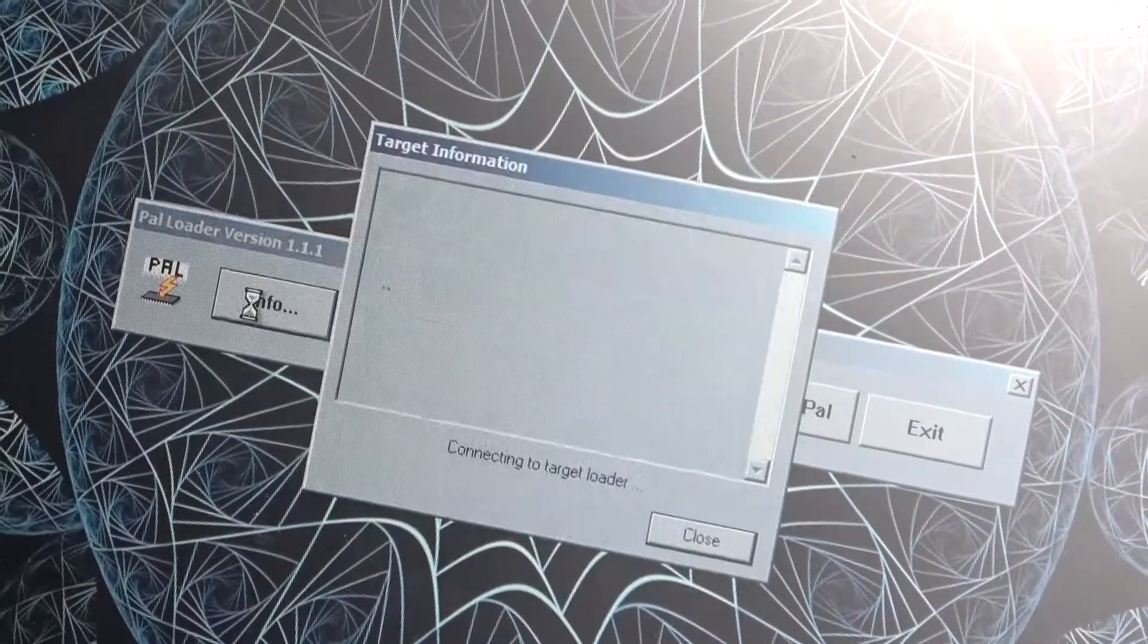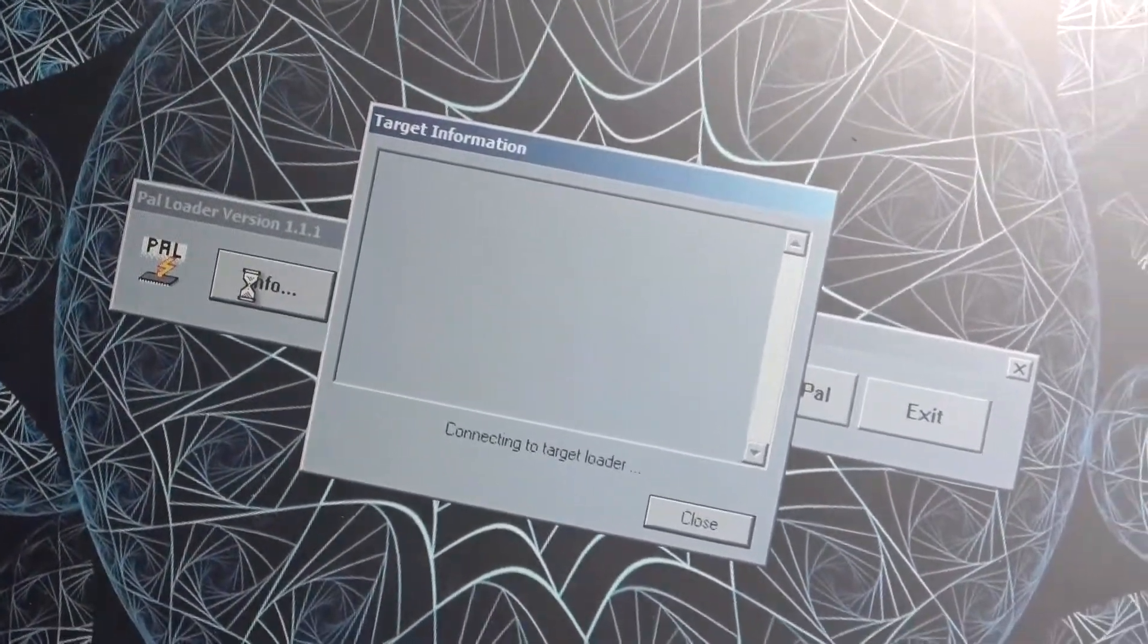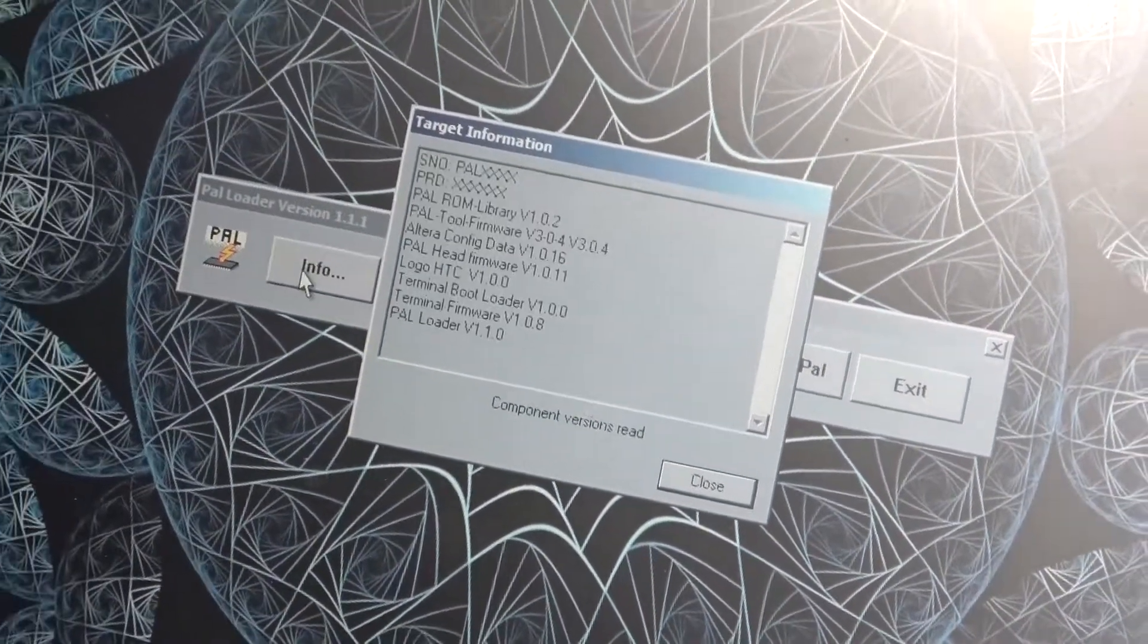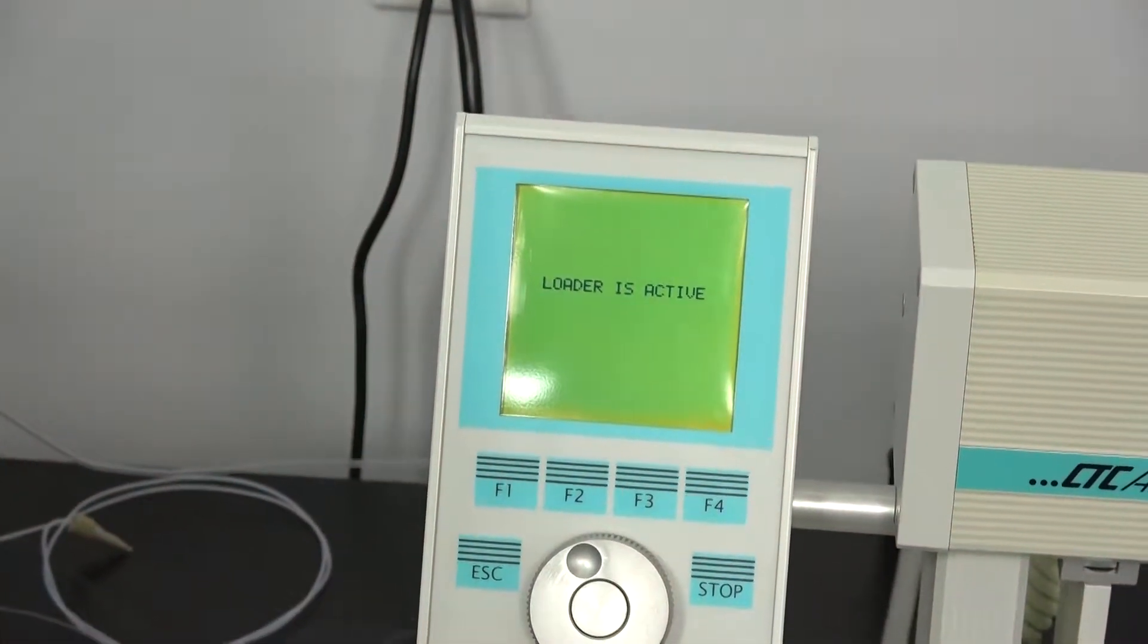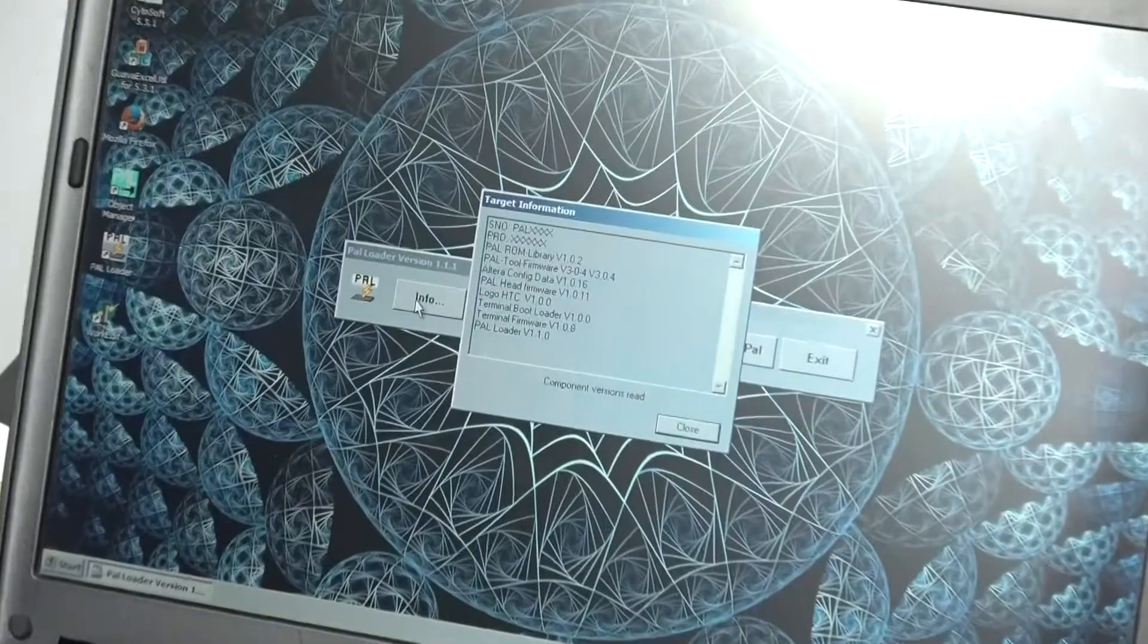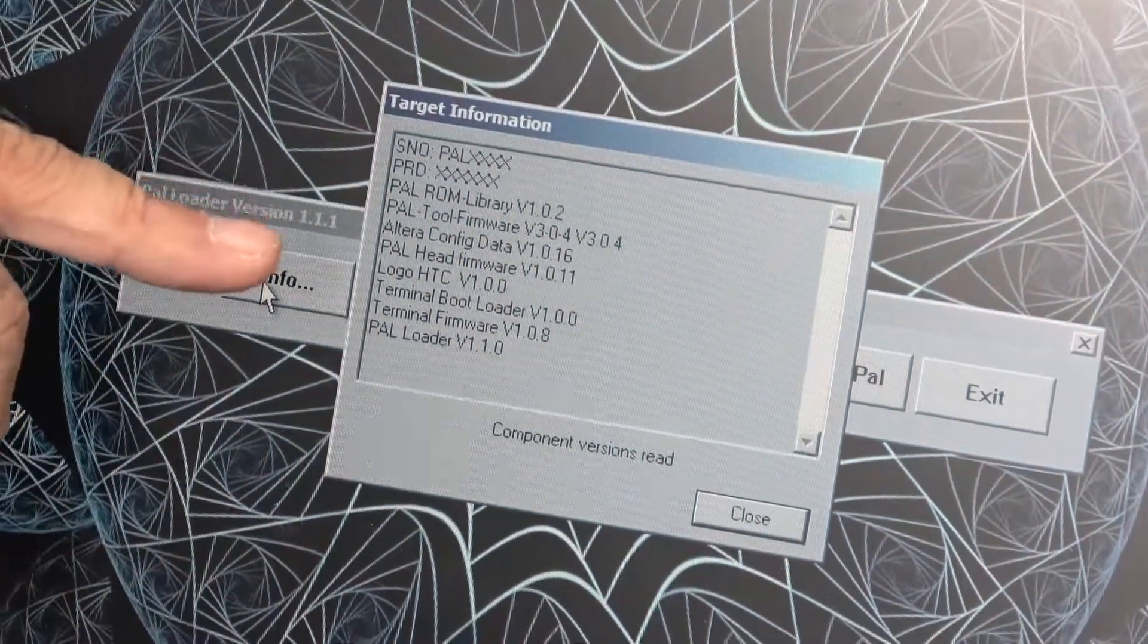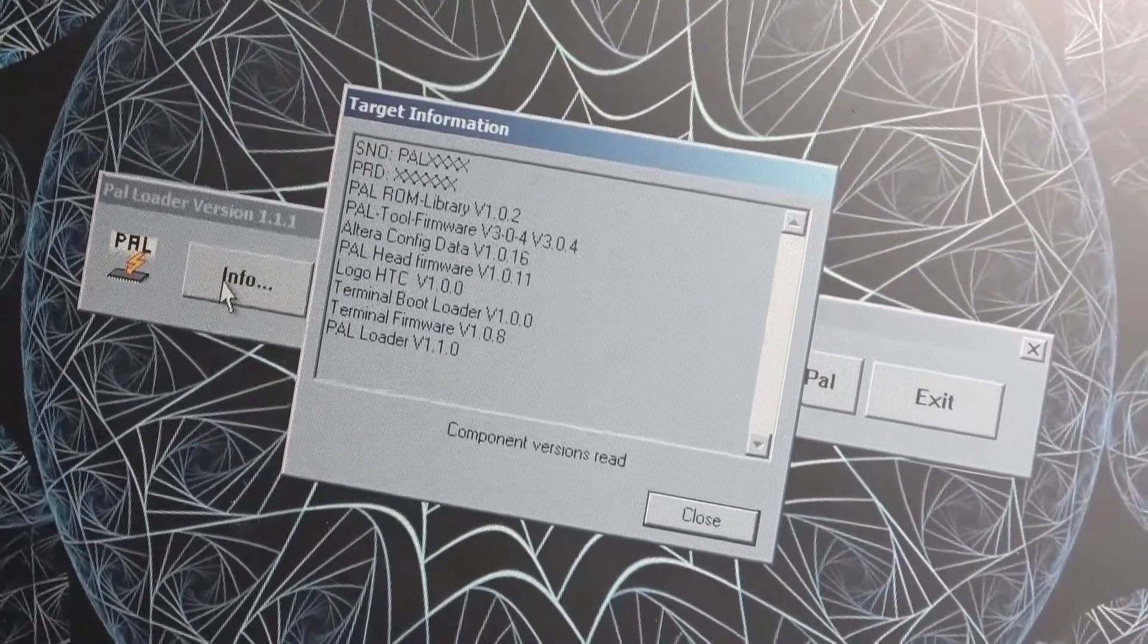You can also get info to find out what version you have. Maybe you've got software that wants a newer, better version. When it is logging in, you'll notice on the control pendant that it tells you the loader is active. So that is no longer a functioning unit while this is in the software. It gives you your serial numbers, your ROM versions, your software versions, your head numbers, all that.